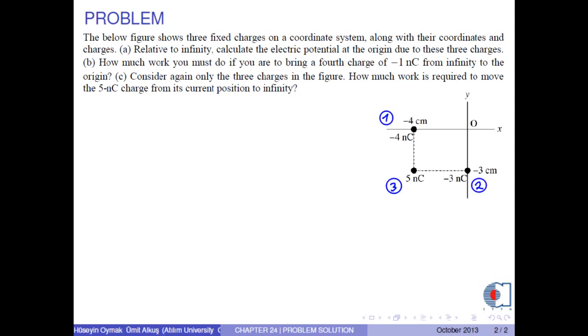Q1 is negative 4 nanocoulombs, where 1 nanocoulomb is 1 times 10 to negative 9 coulombs. The distance between Q1 and the origin is R1, which is 4 cm.